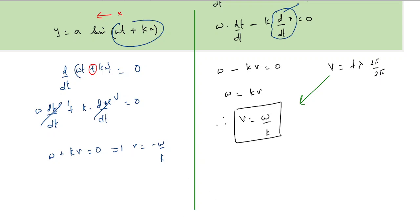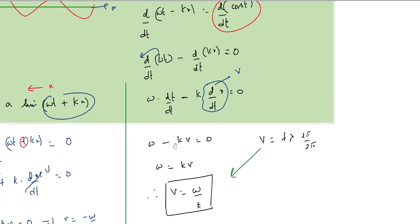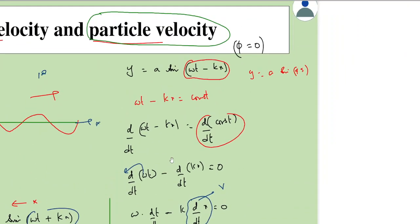To find particle velocity, we should differentiate this term because it gives us the displacement of the particle along the y direction.